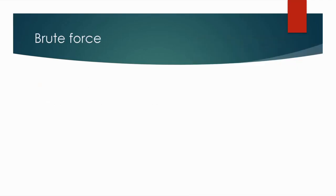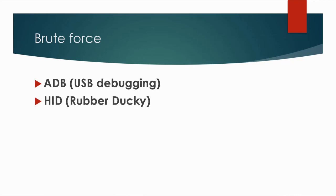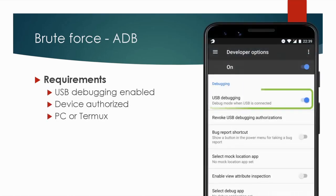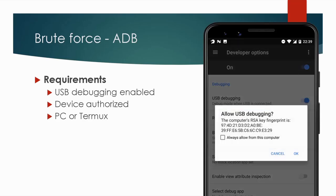Let's focus on the brute force. Brute force can be performed using two options. The first one is using ADB, where USB debugging needs to be enabled. The second one is using HID — human interface device — a rubber ducky. Starting with ADB: the smartphone needs to have USB debugging enabled, and the smartphone we want to brute force the PIN on needs to be authorized by the connected computer or another Android. The problem is that if we receive a smartphone that is already locked, there is no way to enable USB debugging or authorize the smartphone. Because of that, I believe this technique is not really useful.